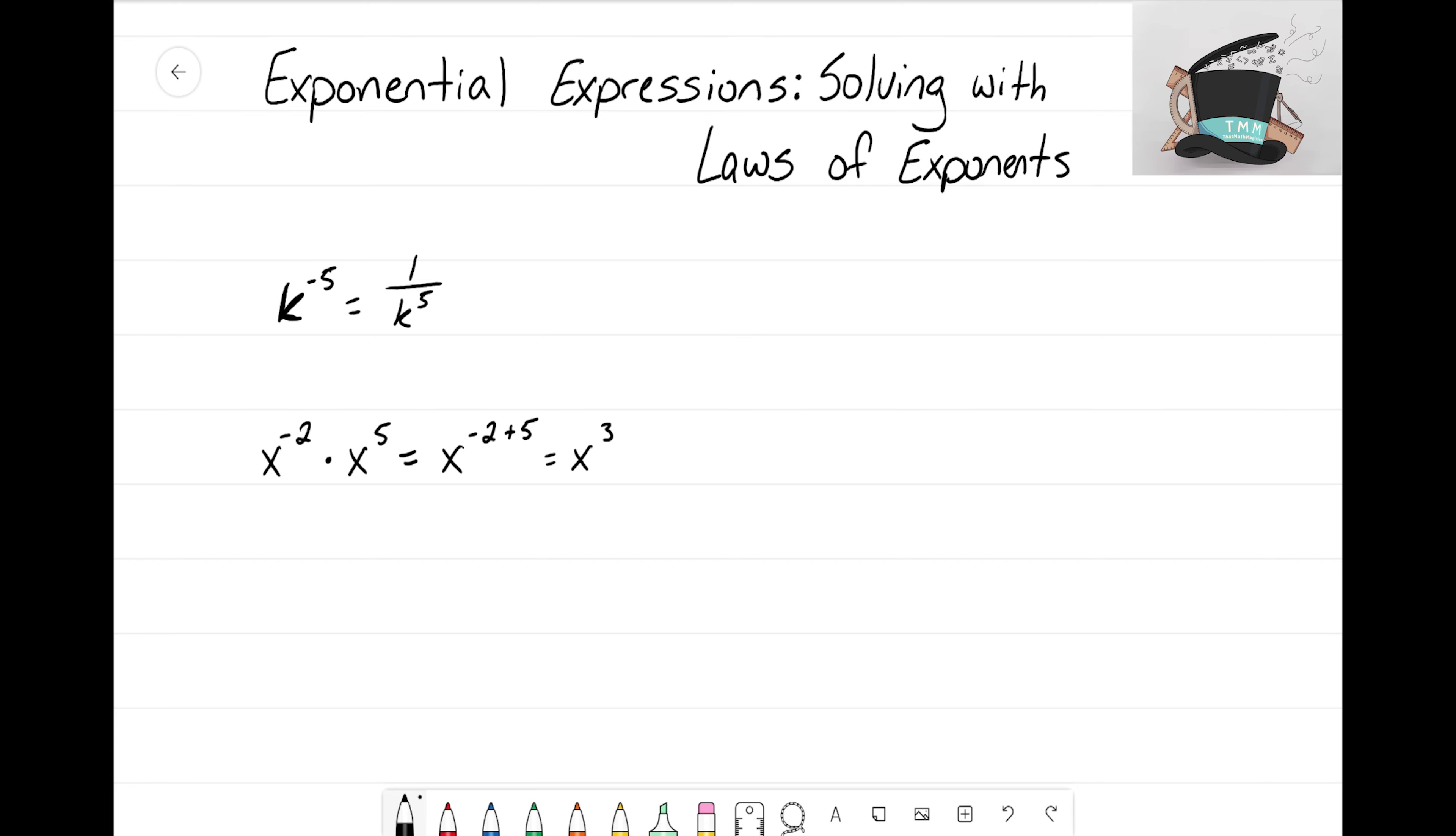What if we had x to the negative 2, the quantity to the fourth power? Again, we want to use that law of exponents - the third one - which says that all I have to do is take these exponents and multiply them out. Negative 2 times 4 would